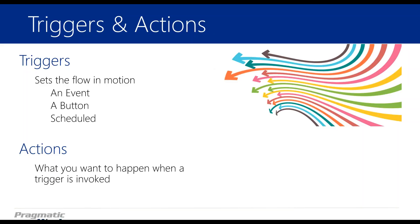An event trigger could be, say, you get an email, or there's a calendar item added to your calendar. A button trigger — you can actually use the Flow app on your mobile phone and add a button to just hit it and immediately trigger a process. For instance, you could build a button that allows your employees to immediately add an item to a SharePoint list to track their location and time — great for contractors or traveling workers. It could capture their address, latitude and longitude, and date and time.